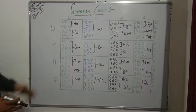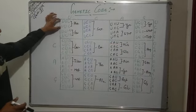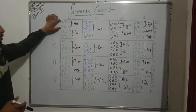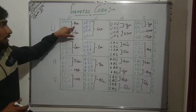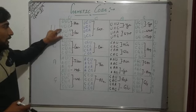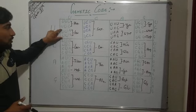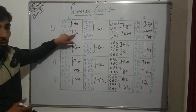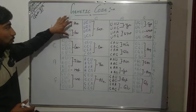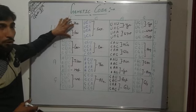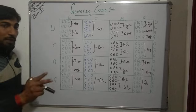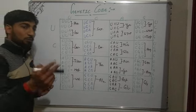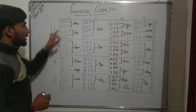These first two codons — UUU and UUC — call for phenylalanine. And these two codons — UUA and UUG — are calling for leucine. So in this box we have two amino acids, each having two triplet codons.